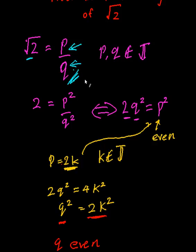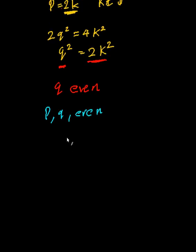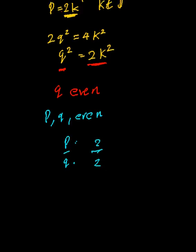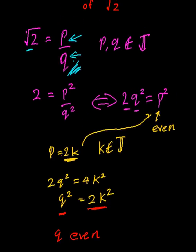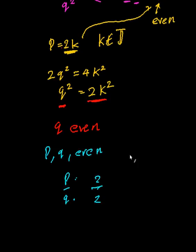So basically we have come to a contradiction, because if I have P and Q and they are both even, I should be able to factorize 2 out of both of them, which I cannot. Because it's the simplest fraction I can get. So there you go, that's a contradiction. Therefore root 2 is irrational.